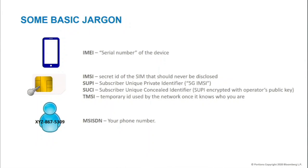In 5G, the equivalent secret ID is called SUPI — Subscriber Unique Private Identifier. There's also SUCI — Subscriber Unique Concealed Identifier — which is essentially your SUPI encrypted with the public key of your operator. I'll talk more about this later. In order to avoid using the IMSI directly, when you connect to a network you derive a temporary TMSI, which is what you normally use when talking with the network. And then there's the MSISDN, which is essentially your phone number — I like to compare the MSISDN to a URL and the TMSI to an IP address.